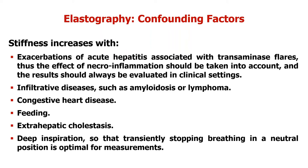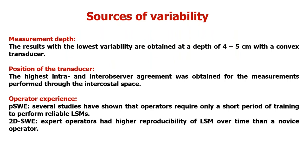There are confounding factors when assessing stiffness, since we are assessing stiffness related to fibrosis, but it may increase due to other factors. Acute hepatitis is associated with transaminase flare, so necroinflammation must always be taken into account and results evaluated in clinical settings. Stiffness also increases in infiltrative diseases such as amyloidosis or lymphoma, congestive heart disease, after eating, extra-hepatic cholestasis, and respiration. It is important that the patient breathes normally when locating the measurement area, then stops breathing when ready to perform the measurement.